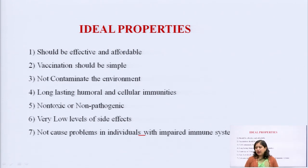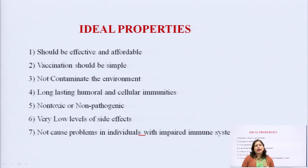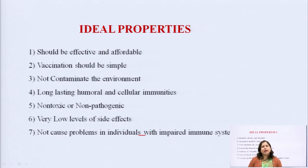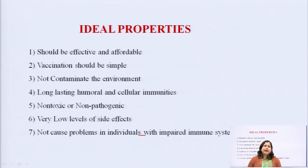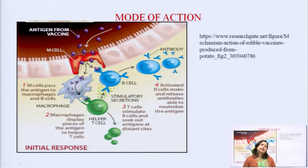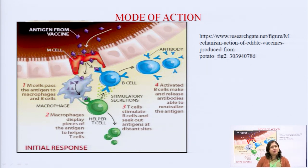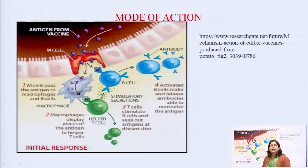The ideal properties of a vaccine are that it should be cost-effective and affordable, vaccination should be simple, it should not contaminate the environment, it should be long-lasting with more effect inside the body for a long period of time, it should not be toxic or pathogenic, and there should be very low side effects. It should not cause any kind of problems inside humans - like there should be no impaired immune system inside the person taking the edible vaccine.